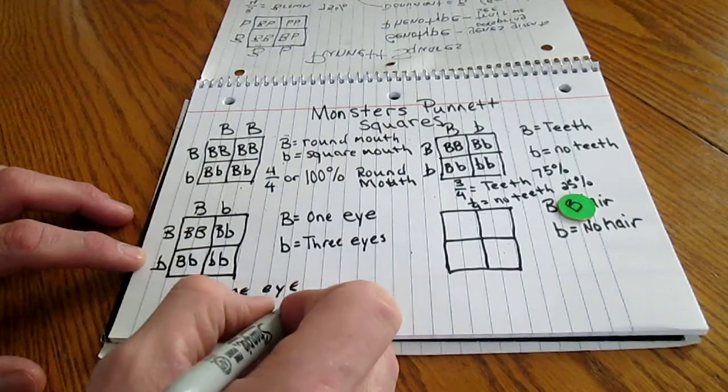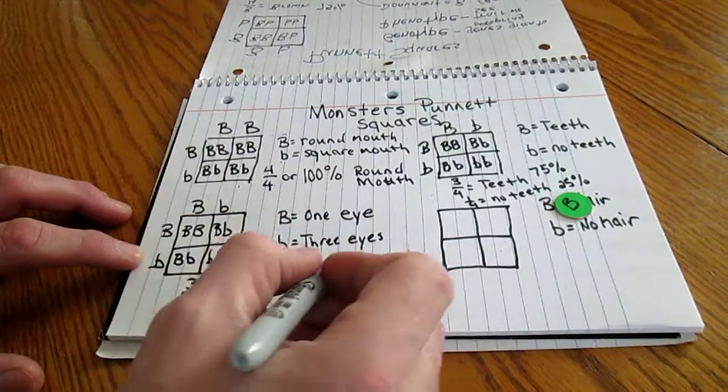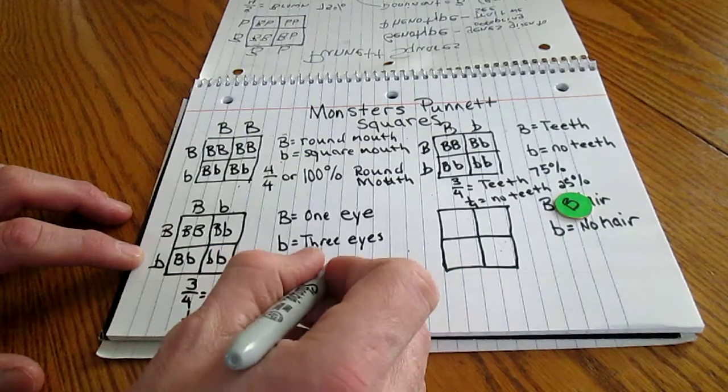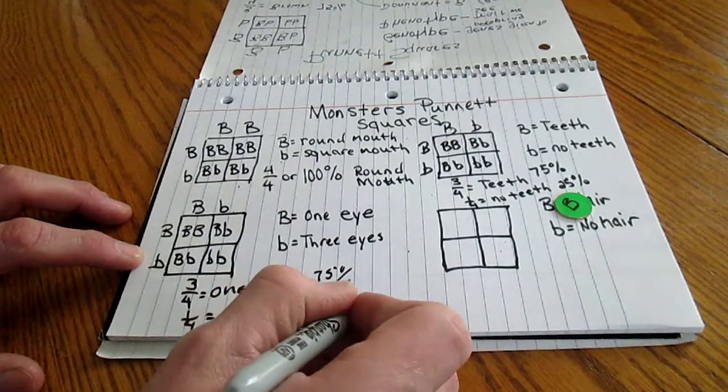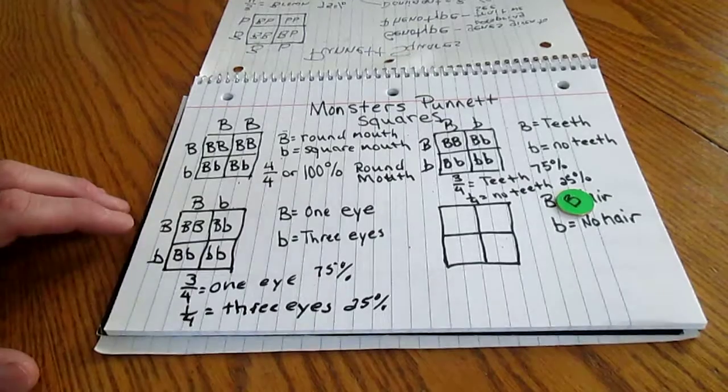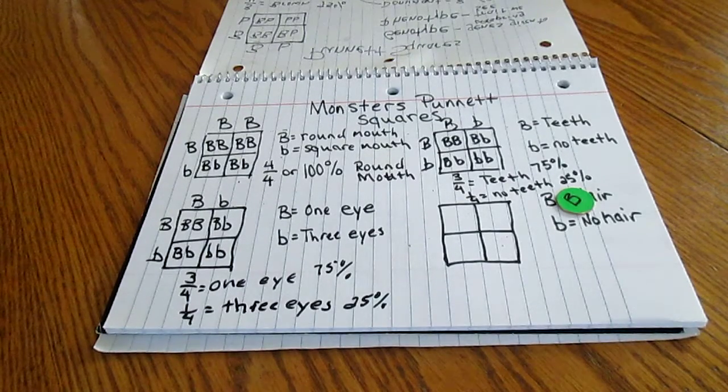And you will need to show both the fraction and the percentage. So, in this case, that's 75% and this is 25%. It should get pretty easy by the time you're done.